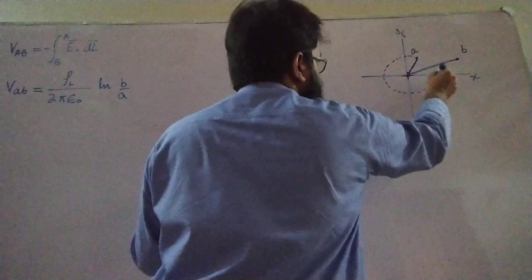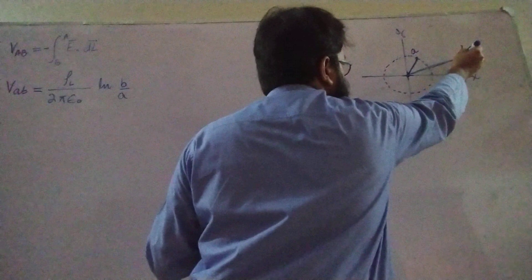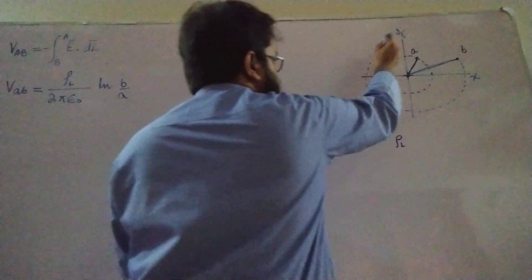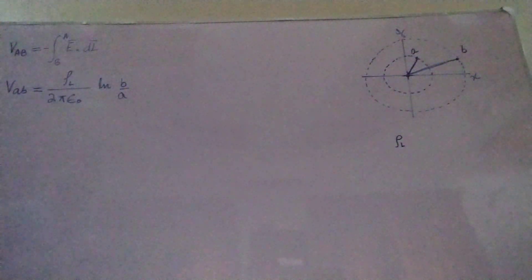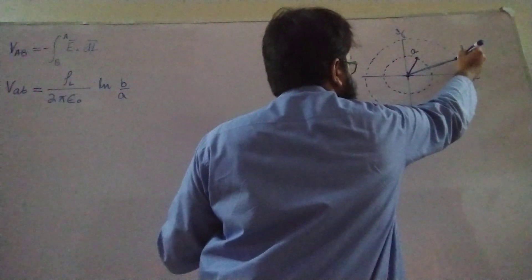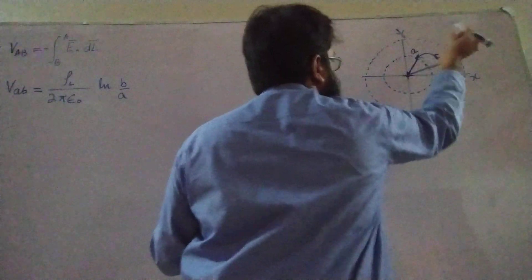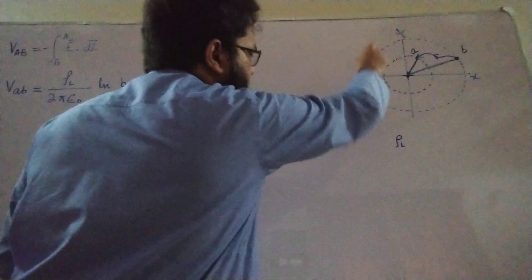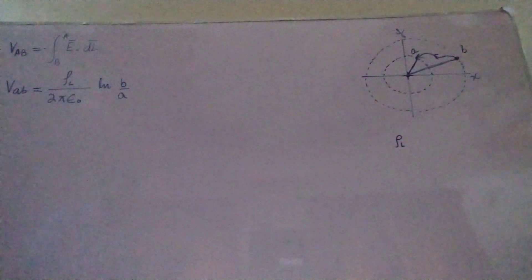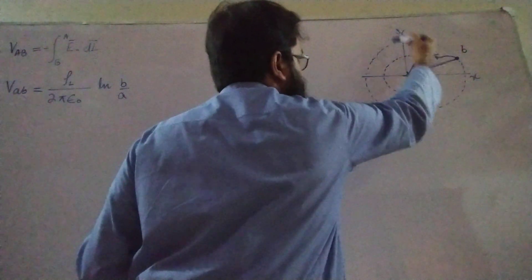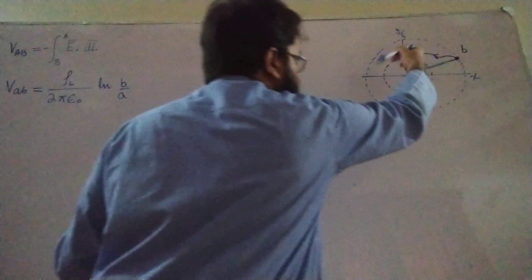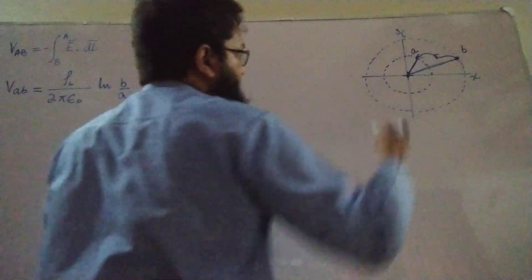Point A lies on a cylinder whose radius is small a, and point B lies on a cylinder whose axis is the Z-axis with radius small b, where the line charge is located. The amount of work done in moving a unit positive charge from one point to another — whether in a straight line, zigzag, or spiral path — is the same as long as the initial and final points are the same, giving the same potential difference.